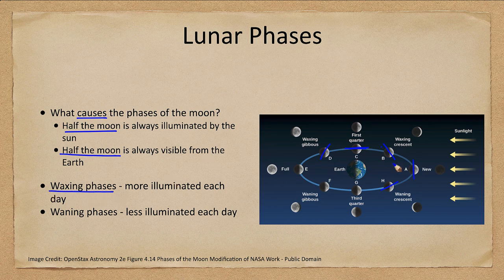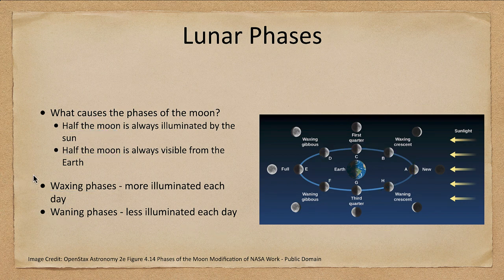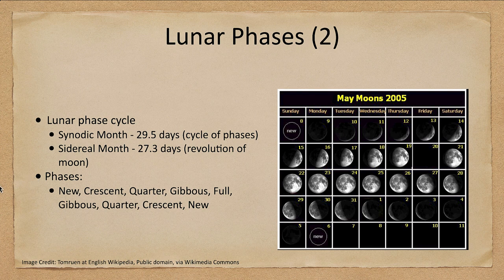We have what we call the waxing phases, which are on the upper section — in that part the moon will be getting more and more illuminated each day. On the bottom we see the waning phases, where less and less of the moon would be visible each day.